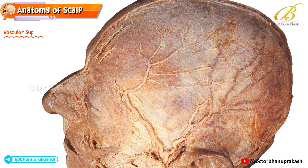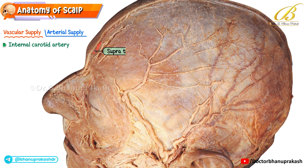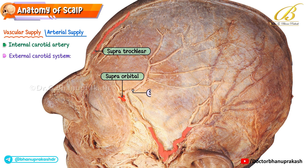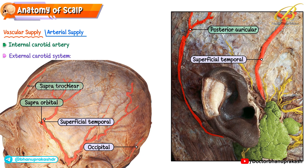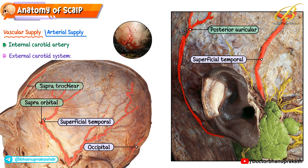The arterial supply of the scalp comes from both the internal and external carotid systems. From the internal carotid system we have the supratrochlear and supraorbital arteries. From the external carotid system, the major contributors are the superficial temporal, occipital, and posterior auricular arteries. These arteries form extensive anastomoses not only across the midline but also between the internal and external carotid systems, explaining both rapid heavy bleeding when injured and excellent collateral circulation supporting good healing.